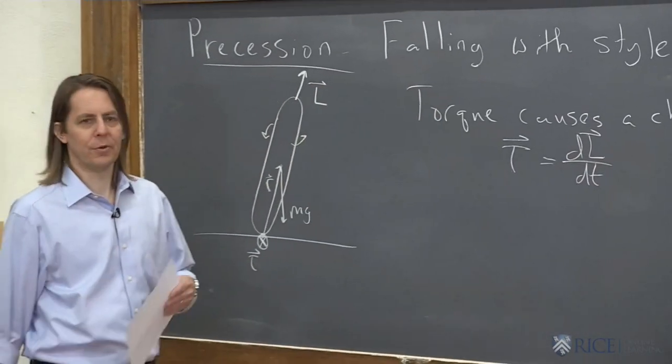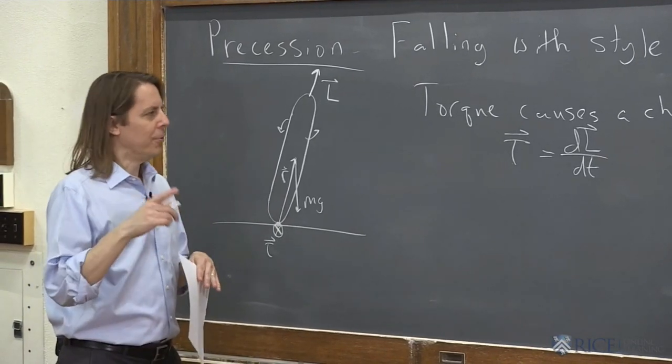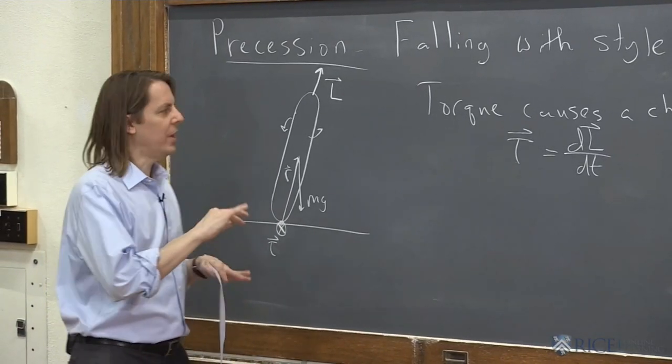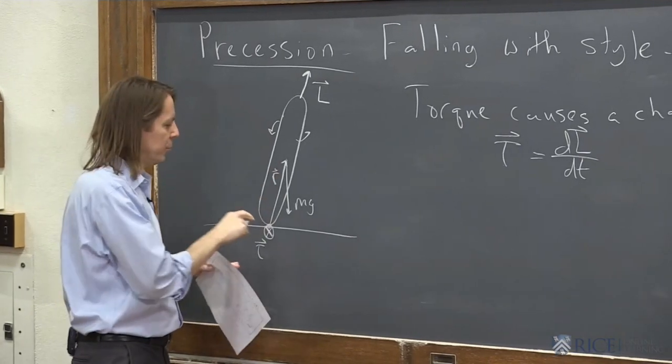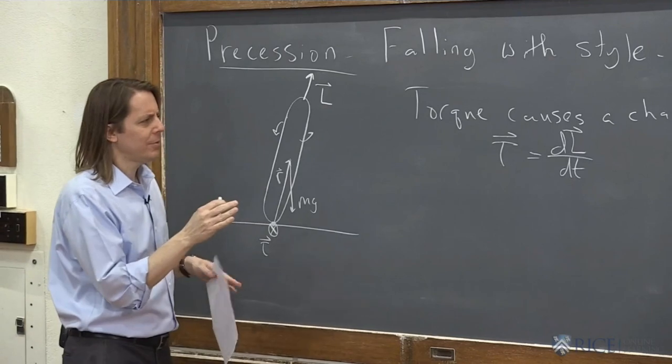But what's different now from before is before the ring was not spinning at all, L was zero, and all the torque had to do was create an L as it fell over. Now we have something different.